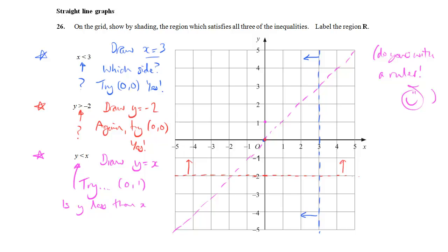And of course the y value here is 1, the x is 0. So no, y isn't less than x. So I don't want the point (0, 1) in my region. So the region must be the other side of the dotted line, below and to the right.